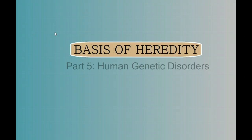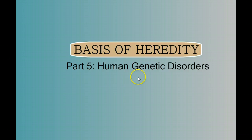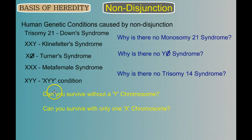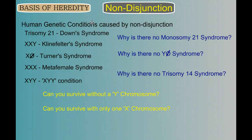Welcome back. We finally are at the last video in our series on genetics. I know I said part four was going to be the last one, but I ran out of time and didn't get to human genetic disorders. So here we are at part five, human genetic disorders. In this video, I want to talk more about different types of human genetic disorders.